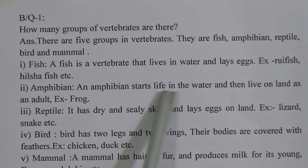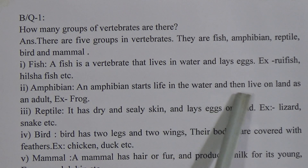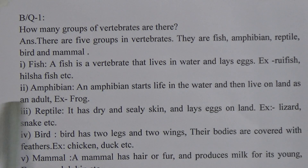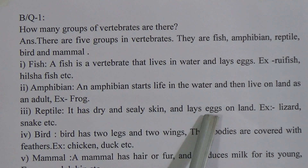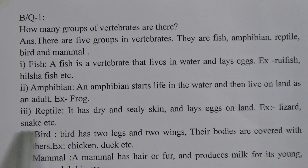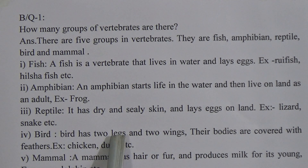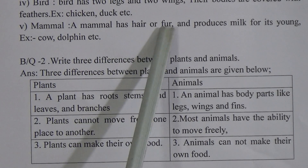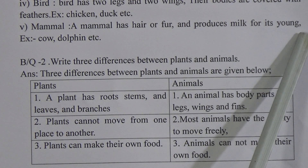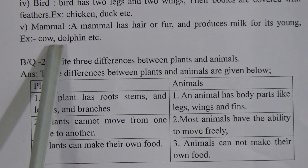An amphibian starts life in water and then lives on land as an adult. Example: frog. A reptile has dry and scaly skin and lays eggs on land. Example: lizard, snake, etc. A bird has two legs and two wings, and its body is covered with feathers. Example: chicken, duck, etc. A mammal has hair or fur and produces milk for its young. Example: cow, dolphin, etc.